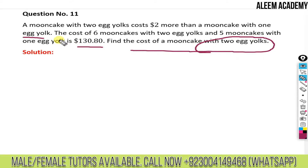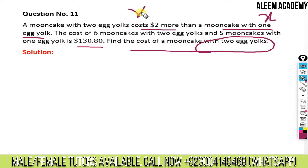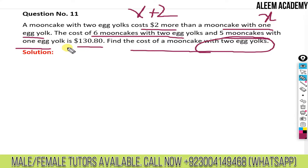Let's read the question again. A mooncake with two egg yolks costs two dollars more than a mooncake with one egg yolk. Let's suppose the mooncake with one egg yolk costs x dollars. Then the cost of a mooncake with two egg yolks will be x plus two. Find the cost of a mooncake with two egg yolks.